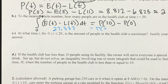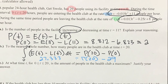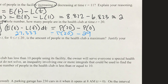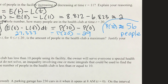When we add 29 to both sides, we get approximately 56 people in the health club at time t=20.